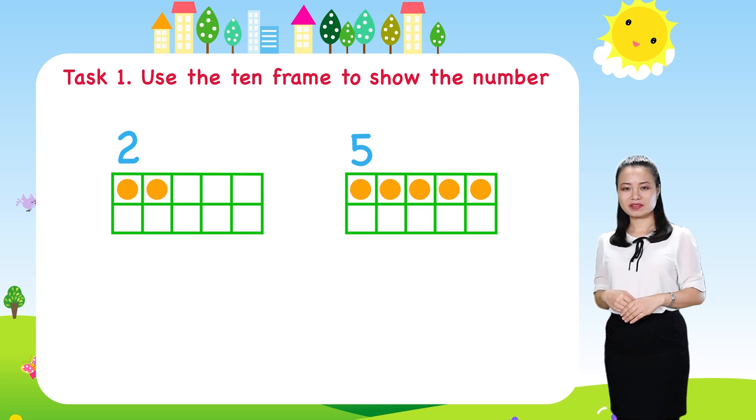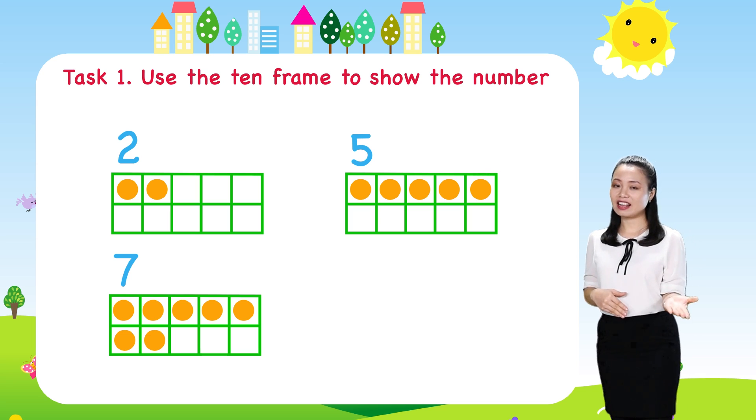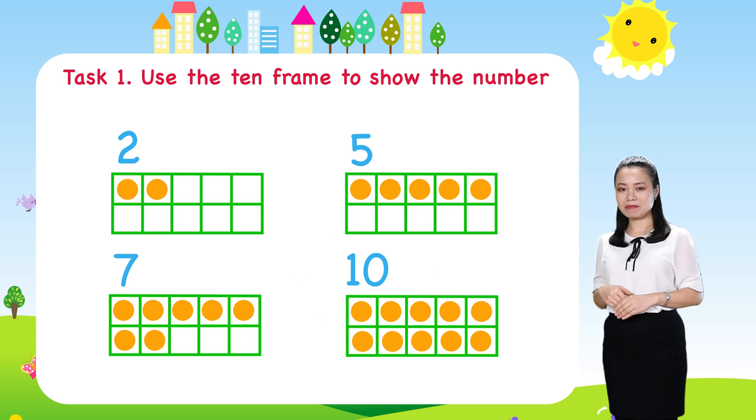Next, to show number 7, draw 7 dots in the 10 frame. The last one, to show number 10, draw 10 dots in the 10 frame.